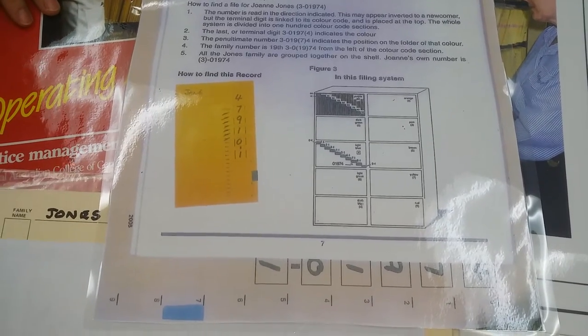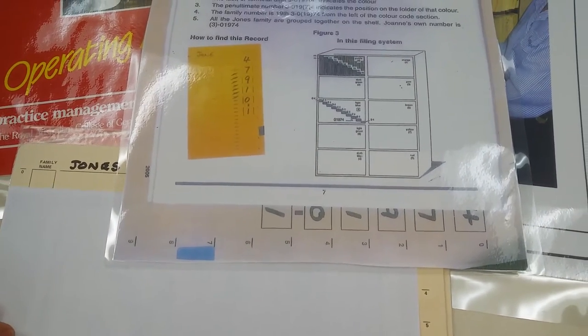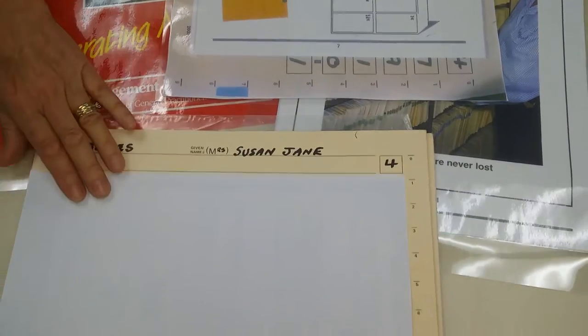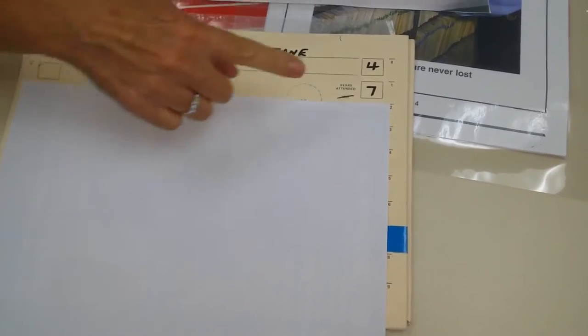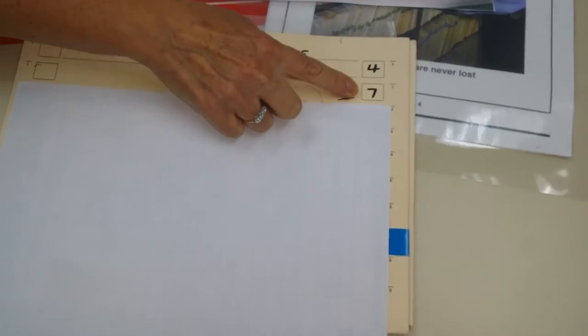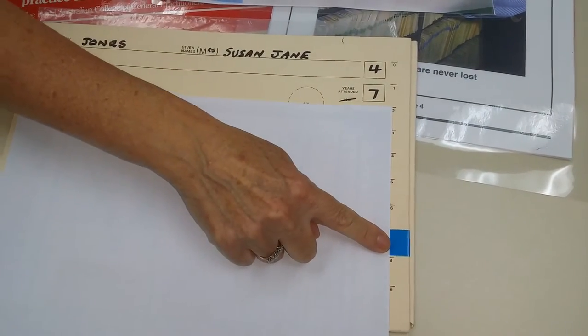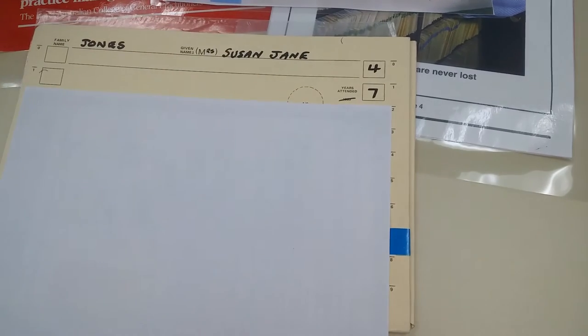Now, penultimate means the last but one number. So when we come down here and we have a look at the penultimate number, it happens to be a 7. And this is why the blue sticker has been placed in position 7.